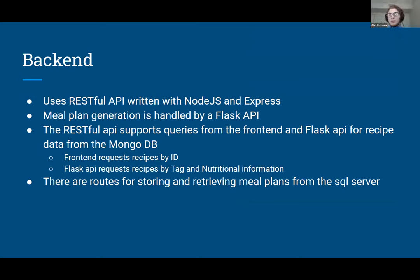Our primary backend container uses a RESTful API written with Node.js and Express. The meal plan generation itself is handled with the Flask API — you'll hear more about that shortly. The primary backend container supports communication between the databases, the Flask API, and the front end. There are routes for pulling meal data to the Flask API from MongoDB, and then storing meal plans into the SQL database from the Flask API as they're generated. It also supports querying meal data from the front end to load recipes, using ID-based queries while Flask requests use tags and nutritional information.